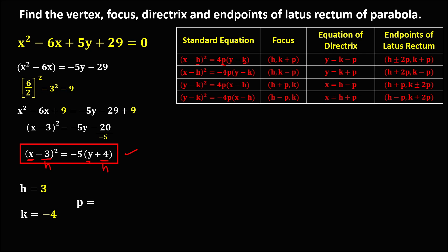To solve for p, observe in the standard equation we have 4p. To solve for p, divide this number by 4, and take note that p is always positive. So p equals 5 over 4. Since we now have the three values h, k, and p, we can find the vertex, focus, directrix, and endpoints of the latus rectum. We need to find the formulas for these unknowns based on our standard equation.